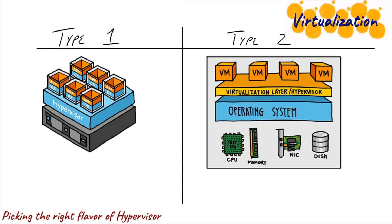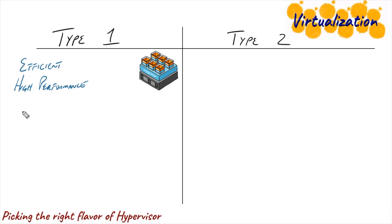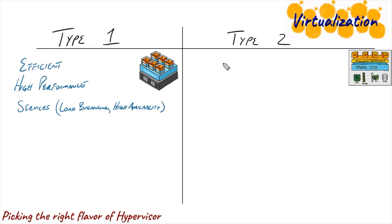Now let's talk about why both still exist. A type one hypervisor is all about being efficient and high performance. It can also tie into higher-level services — type one hypervisors can connect to each other to provide load balancing or high availability, basically services where different hypervisors can lean on each other. A type two hypervisor, where supporting virtual machines runs as an application, may seem less efficient and lower performing, but it allows for a multipurpose machine, and that is really what gives type two hypervisors their purpose in life.